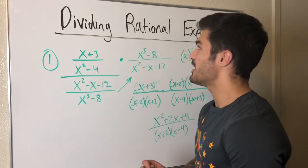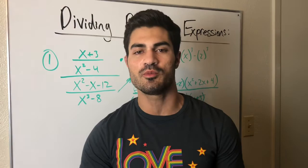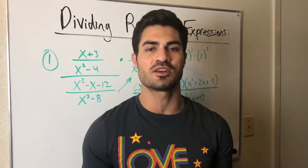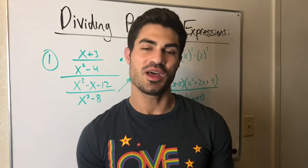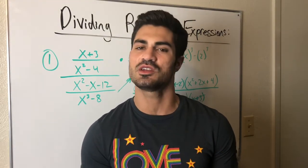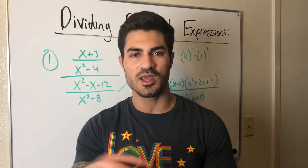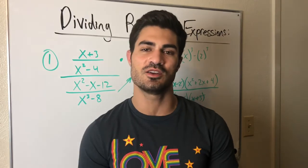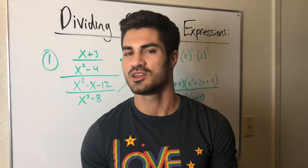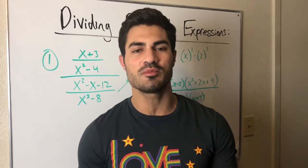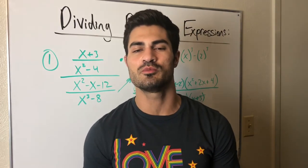So dividing rational expressions is a lot like multiplying them — that's what you end up doing. You just have to remember that one trick: flip the second fraction, then multiply across. The process is: factor everything completely, combine, cancel, and that's your answer. You just have to practice the factoring and be able to notice things like difference of cubes. Hope this video helps — hit like, leave comments below, subscribe, and I'll see you next time for more brain gains!